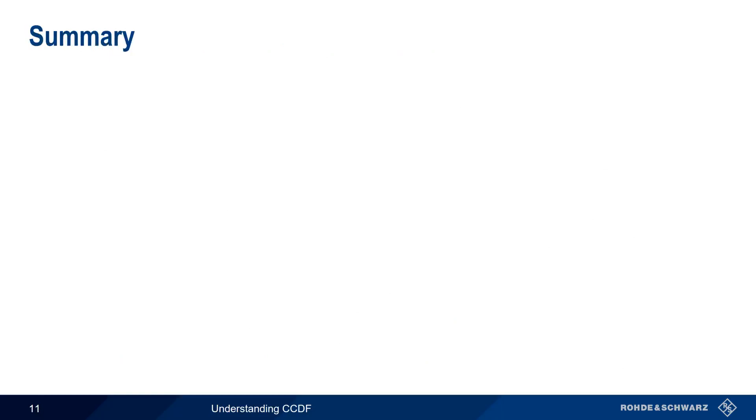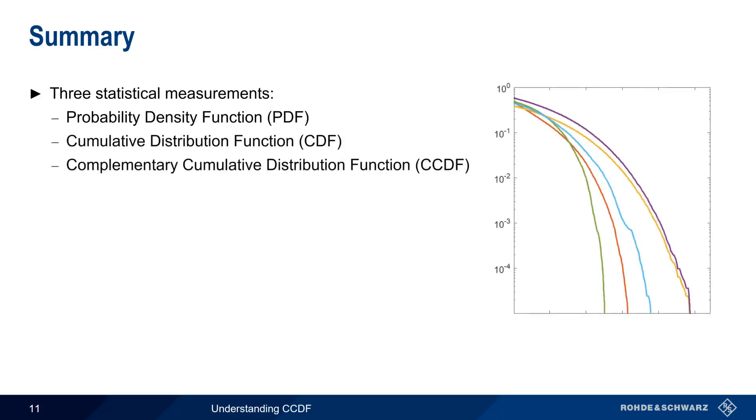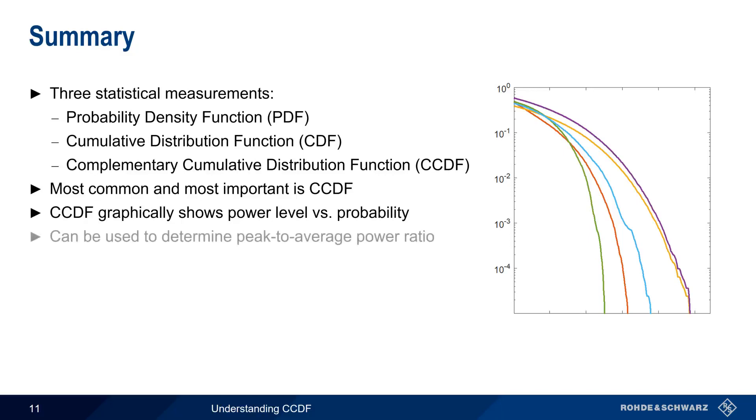So in summary, there are three statistical power measurements: the probability density function or PDF, the cumulative distribution function or CDF, and the complementary cumulative distribution function or CCDF. Of these, CCDF is, by far, the most common and the most important. CCDF graphically represents the percentage of time that a signal reaches or exceeds a certain power level, and thus also provides information on the signal's peak-to-average power ratio.